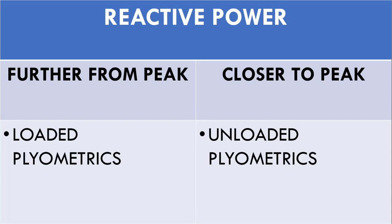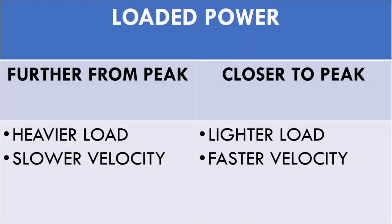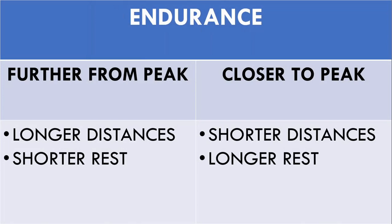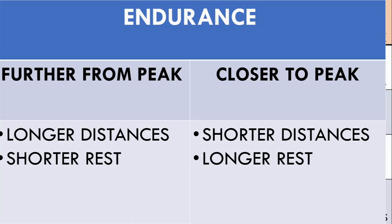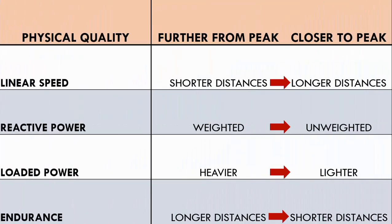A sprinter won't need change of direction ability or hypertrophy training unless for injury prevention. Linear speed training may follow a short-to-long approach, starting with sprints as short as 30 meters and building up to 100 meters when the athlete needs to peak. Reactive power may begin with loaded plyometrics and transition to unloaded and overloaded plyometrics. Loaded power again transitions from heavier to lighter loads with faster movement. Endurance training may start from longer distances of up to 200 meters with shorter rest, transitioning to around 120 meters with longer rest and faster speeds.